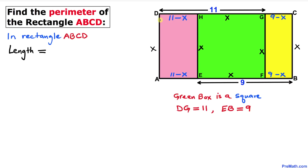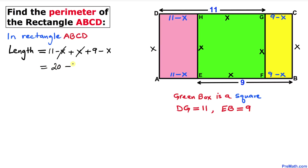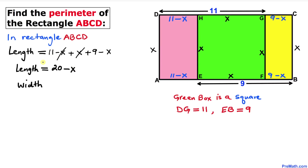Now let's find the length of rectangle ABCD. The total length is the sum of the individual segments: (11 minus x) plus x plus (9 minus x). The negative x and positive x cancel, so we end up with 11 plus 9 minus x, which gives us 20 minus x.